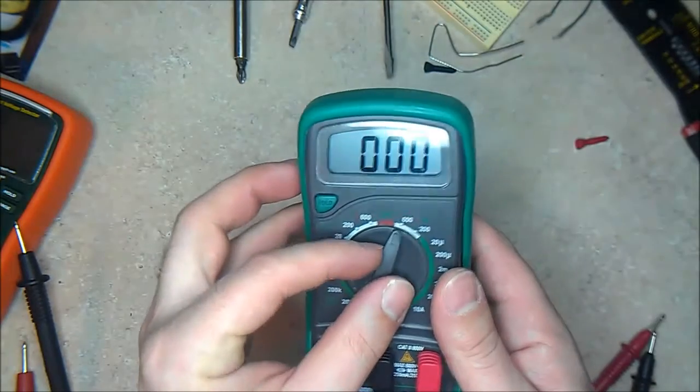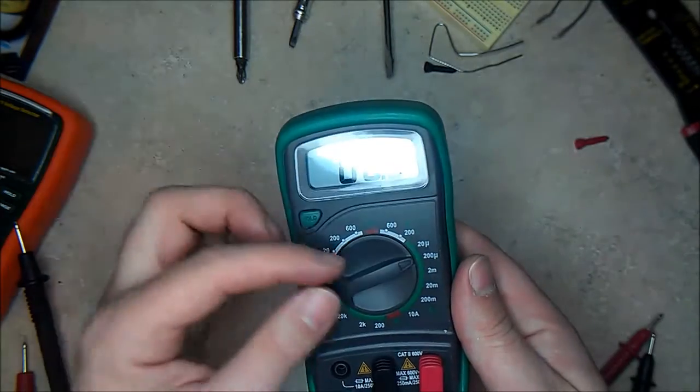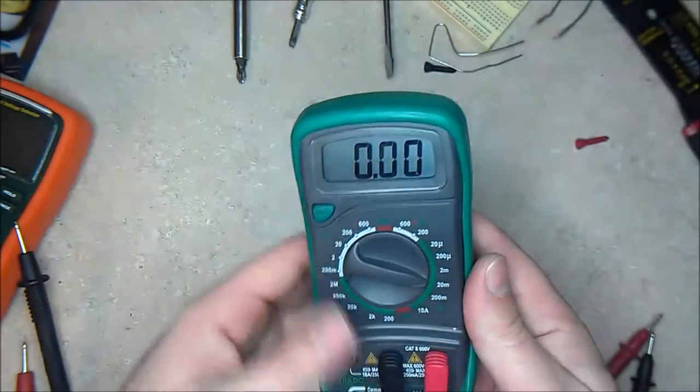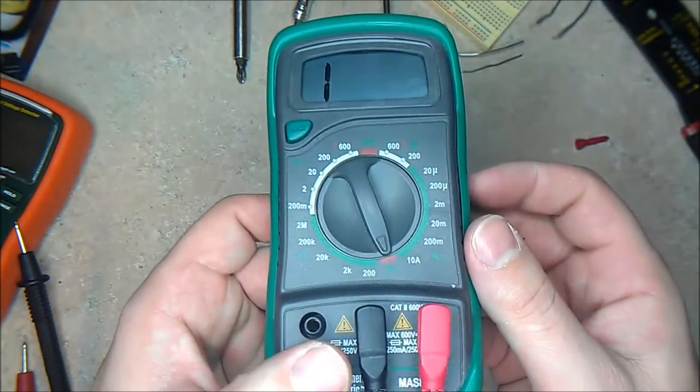Same thing goes for the volts AC: 200, 600. And then you have the microamps, milliamps, as well as the resistance, and we have continuity right here.